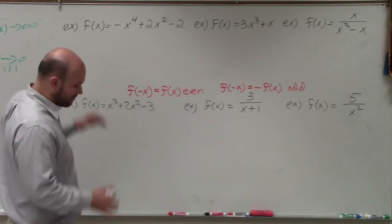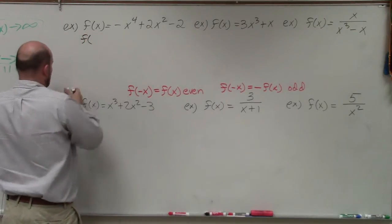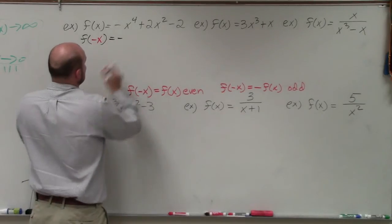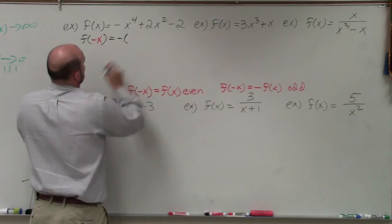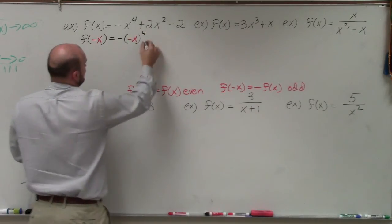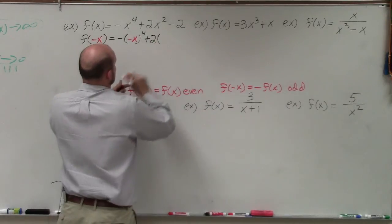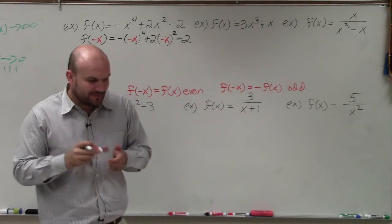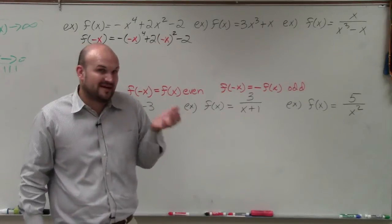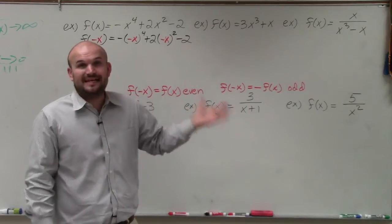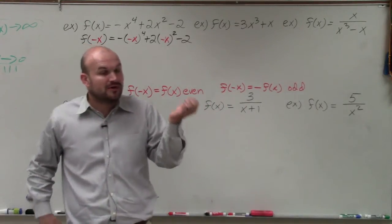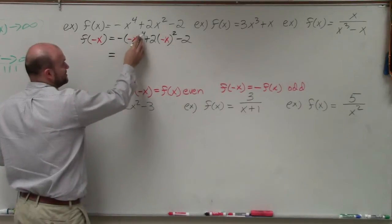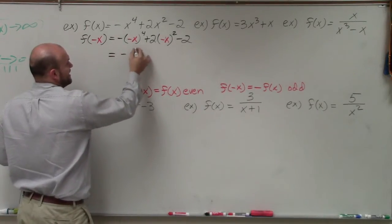So here we go. All we're simply going to do is evaluate each function for f of negative x — we're going to replace x with negative x. So here I have negative x raised to the fourth plus 2 times negative x squared minus 2. When raising a negative x to a power, remember: a negative number or variable raised to an even power is always going to be positive; raised to an odd power, it's always going to be negative. So negative x to the fourth is positive x to the fourth.